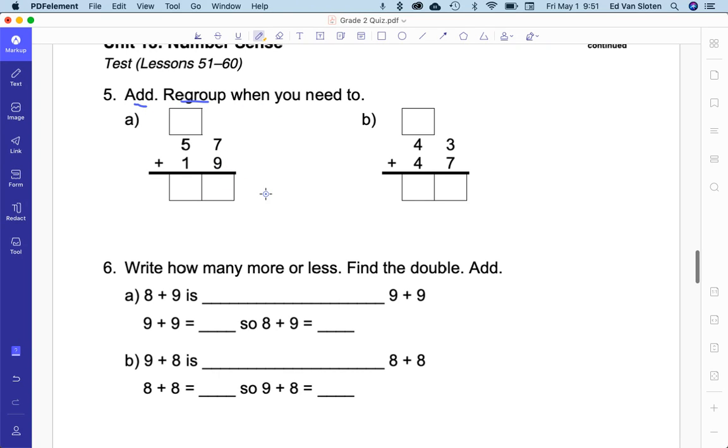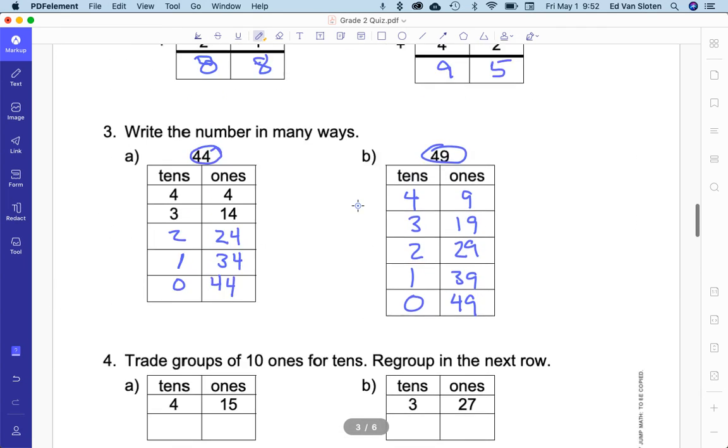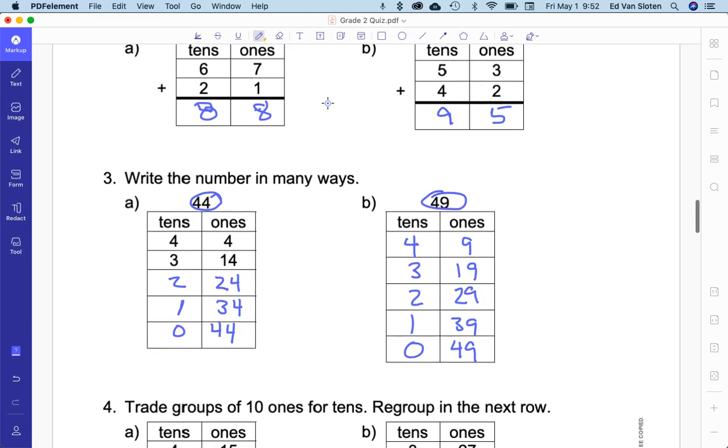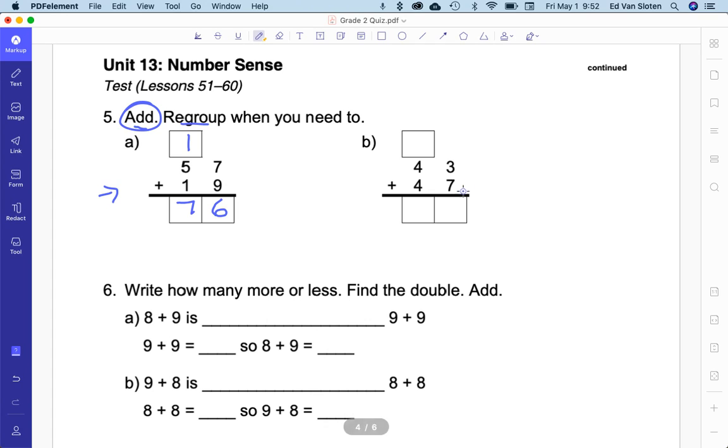Add, regroup when you need to. Well, 7 plus 9 is 16. So, I've got 6 in the ones column and 1 in the tens. I need to regroup. So, I put the 6 and the 1. 7 plus 9 is 16. And now, I add 1 plus 5 plus 1 and I get 7. This is the way that should make sense to you. And then, this will start making sense to you in maybe grade 6 or 7. 3 plus 7 is 10. That's 0 in the ones column and 1 in the tens column. 4 plus 4 is 8. 8 plus 1 is 9.